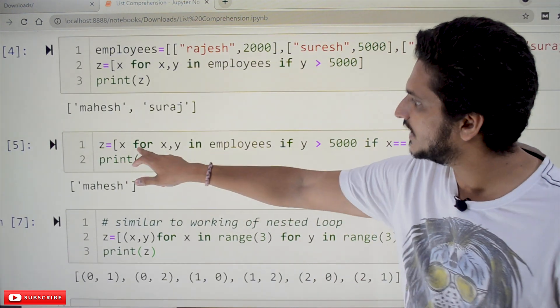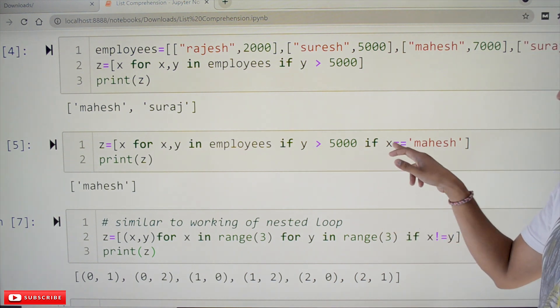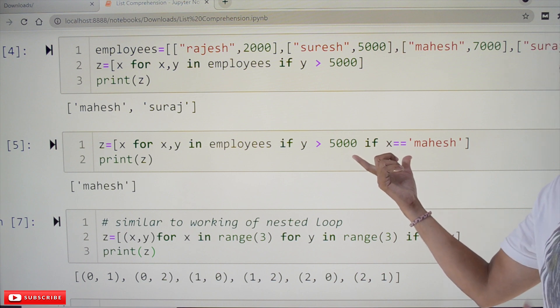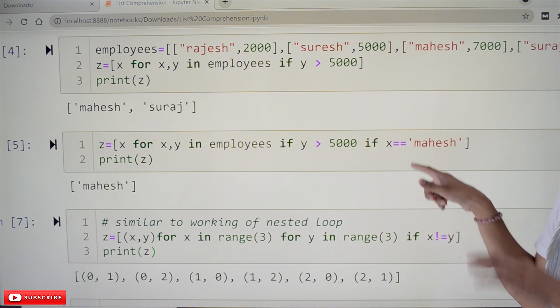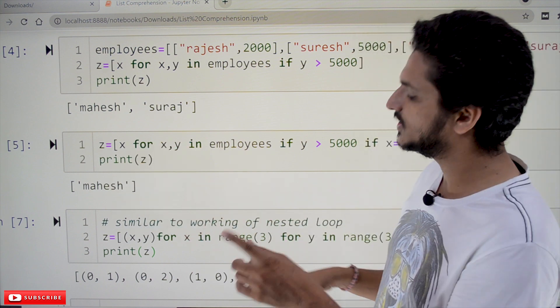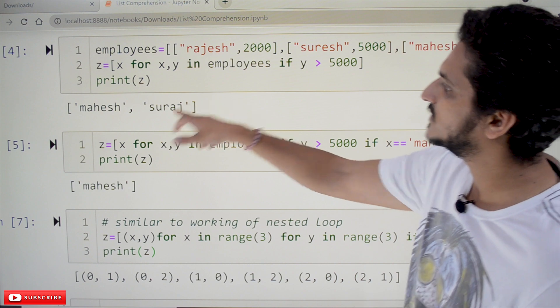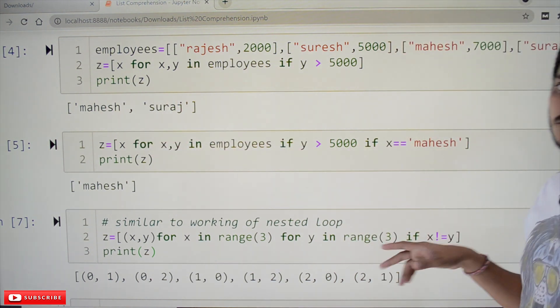And the next one: x for x, y in employees if y > 5000 if x == 'Mahesh'. We have written any number of if statements. Means here this condition and this condition. Then only the output will be considered. So, that's why Mahesh is considered. In the above example, Mahesh and Suresh. Here we have written two if statements. Both the conditions should be satisfied.